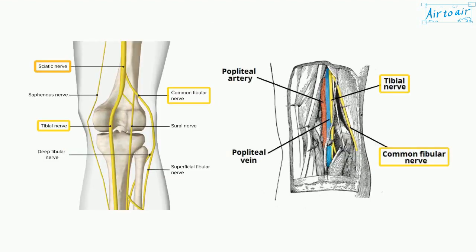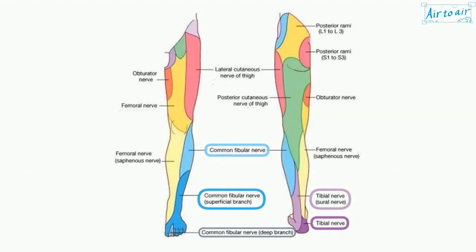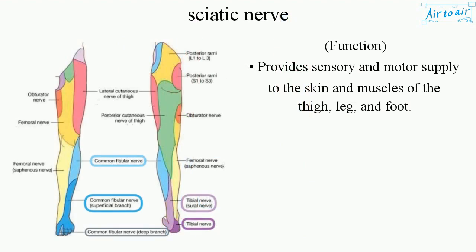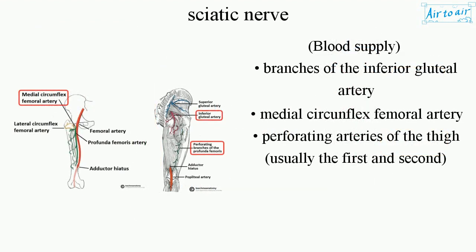Branches of the sciatic nerve include the muscular branches, the tibial nerve, and the common fibular nerve. Its function is to provide sensory and motor supply to the skin and muscles of the thigh, leg, and foot. Blood supply comes from branches of the inferior gluteal artery and the medial circumflex femoral artery.